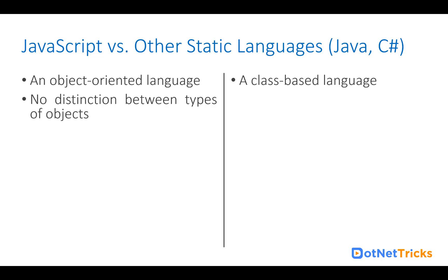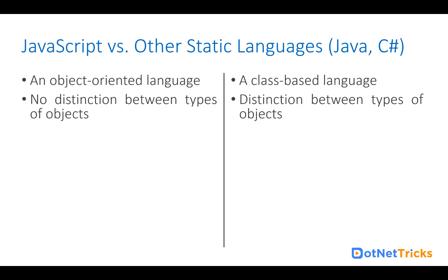When you create an object in JavaScript, you can assign any object type of value to it. There is no distinction between types of objects. But in Java and C#, if you have created an object of employee type, you can only assign an employee type object to it. In JavaScript, you can assign a customer object to an employee object, because there is no type distinction. In static languages like Java and C#, only a student type instance can be assigned to a student type object.